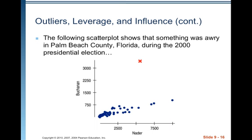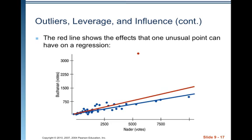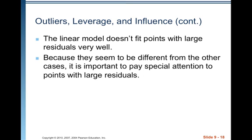The following scatter plot shows that something was awry in Palm Beach County, Florida during the 2000 presidential election. All the other counties are in blue, and Palm Beach County is the red X. The red line shows the effect that one unusual point can have on a regression — the red line is the regression with the outlier, and the blue line is the regression without it. The linear model doesn't fit points with large residuals well, so it's important to pay special attention to those points.